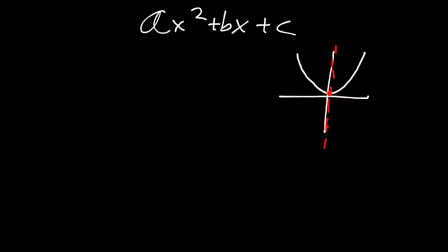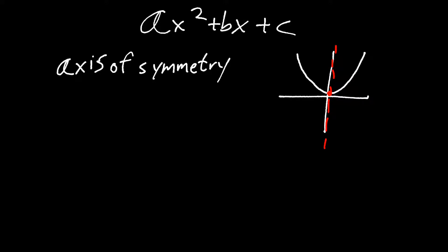To get that axis of symmetry, the way we find that — axis of symmetry — is through x equals the opposite of b all over 2a. Taking this formula, opposite of b over 2a, will give you an x value for the axis of symmetry.